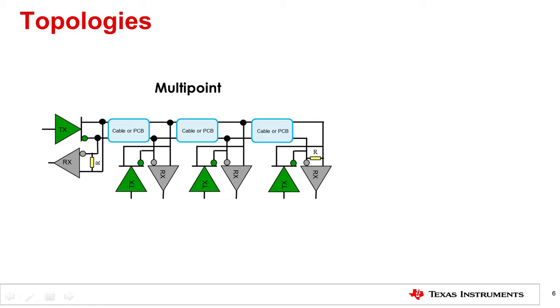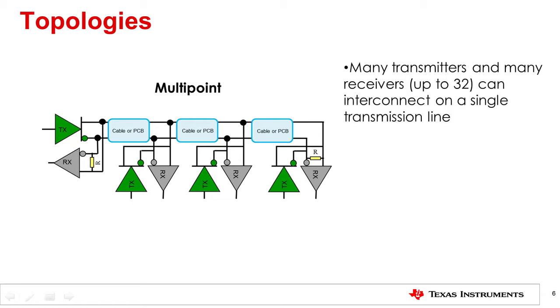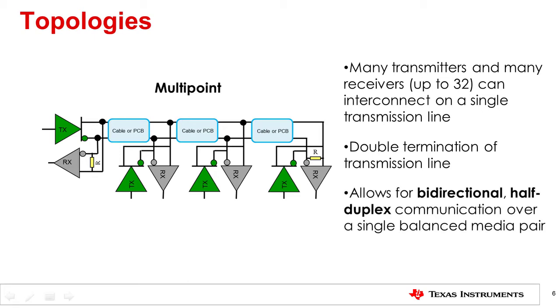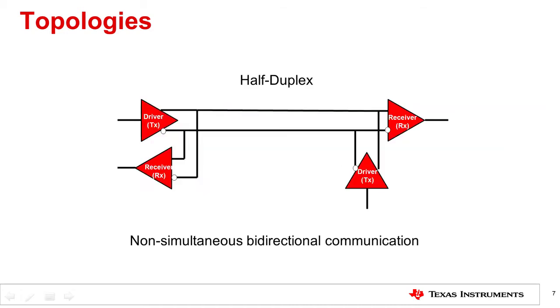The third one is multipoint. In a multipoint configuration, many transmitters and many receivers can be interconnected on a single transmission line. The key difference here is the presence of two or more drivers. Such a situation creates contention issues that need to be addressed with point-to-point or multi-drop systems. To support the location of the various drivers throughout the transmission line, double termination of the transmission line is necessary. Multi-point operation allows for bidirectional, half-duplex communication over a single balanced media pair. Half-duplex is a term referring to non-simultaneous bidirectional communication. Think of it as using a walkie-talkie to communicate. You can talk both ways, but only one person can talk at a given time.